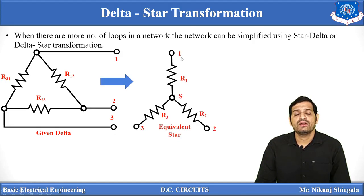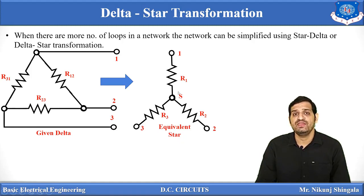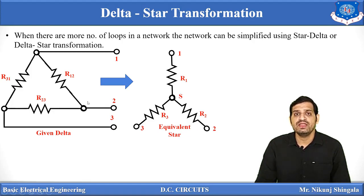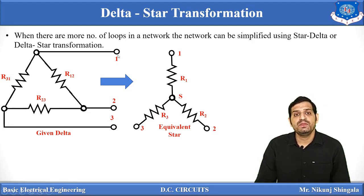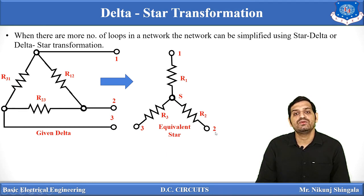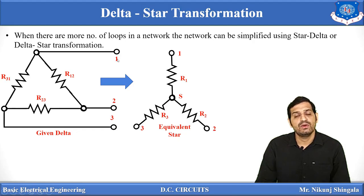For the equivalent star network, the resistances are R1, R2, and R3, where one end of each resistance is connected to a common point known as the star node. Both networks are identical if the resistance between any pair of terminals in the given delta equals the resistance between the corresponding pair in the equivalent star — for terminals 1-2, 2-3, and 3-1.